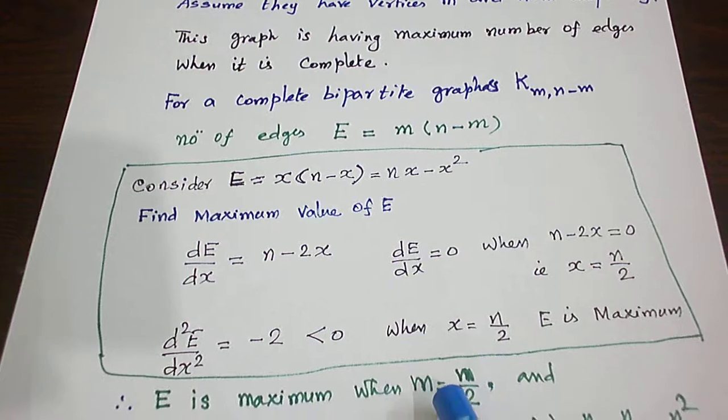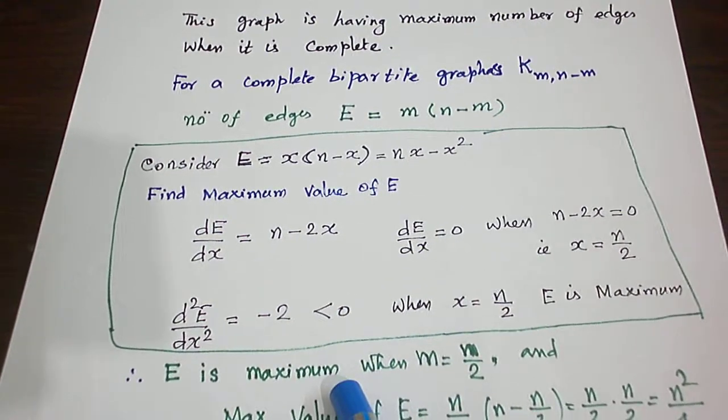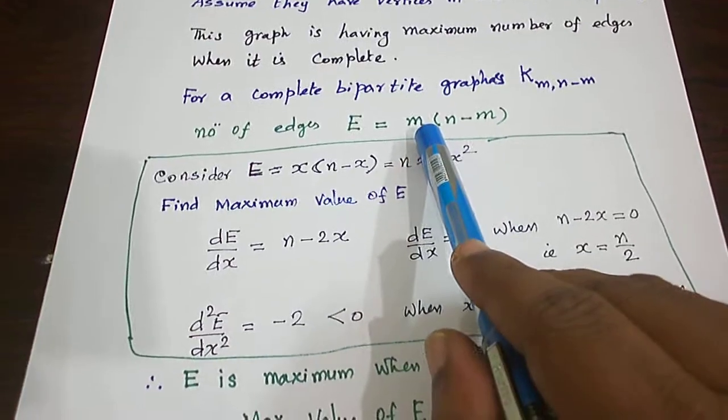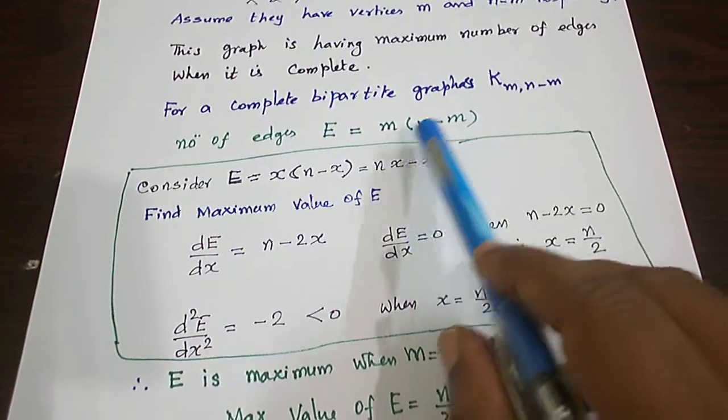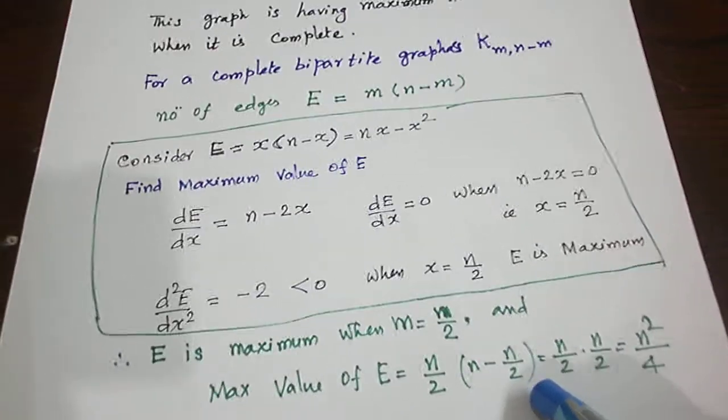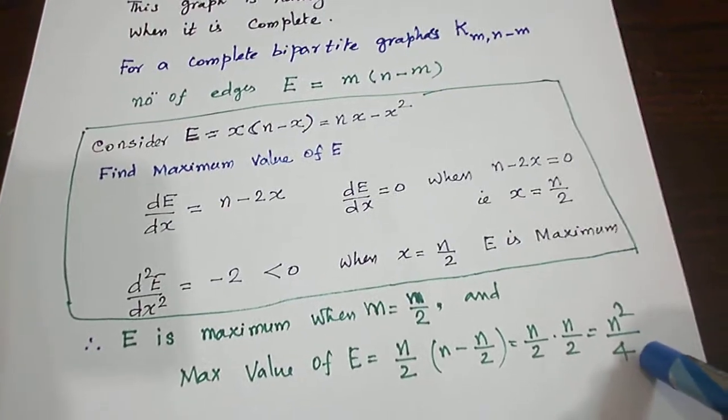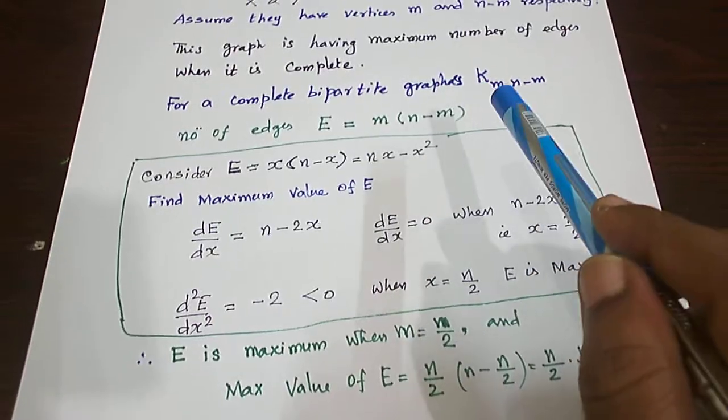At m equals n by 2, the number of edges is maximum. When I substitute m equals n by 2, I get the maximum number of edges: n by 2 into n minus n by 2. When we simplify, we get n² by 4. That gives the maximum number of edges in a bipartite graph when it is complete.